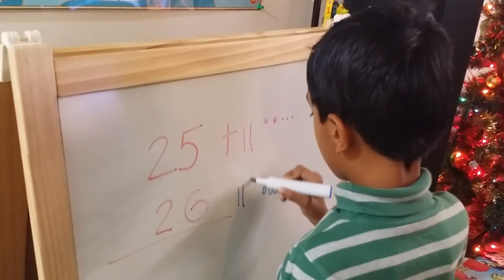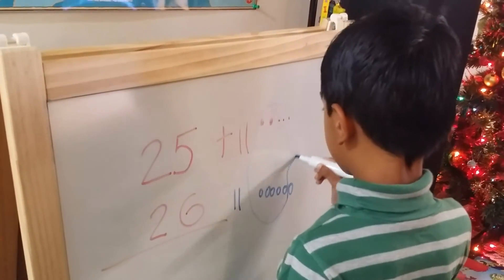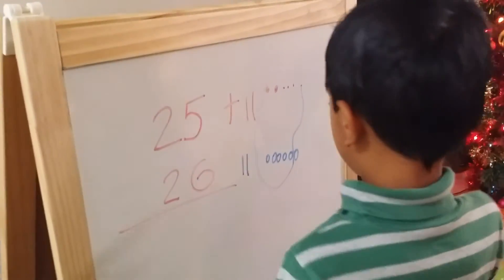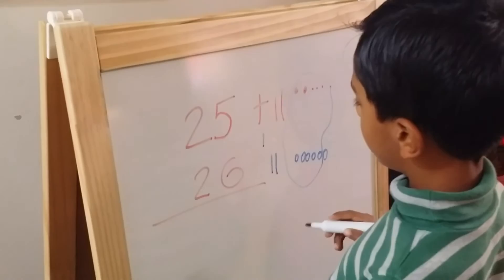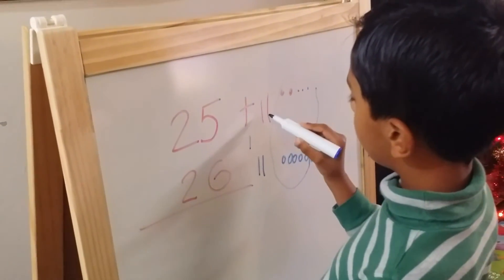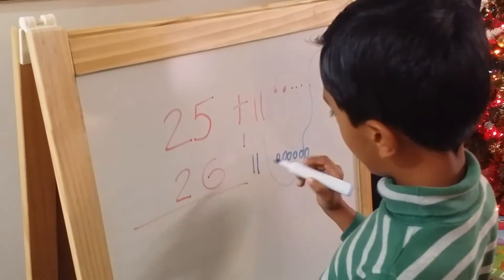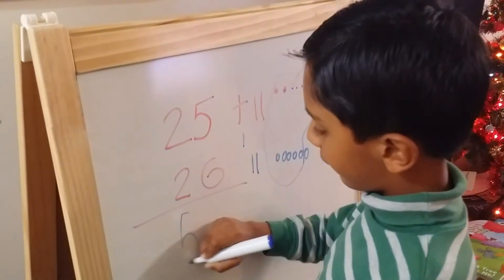I finished the number tens in a circle like this. Add one more here in the middle. We have to count. One, two, three, four, five. Write the number five here.